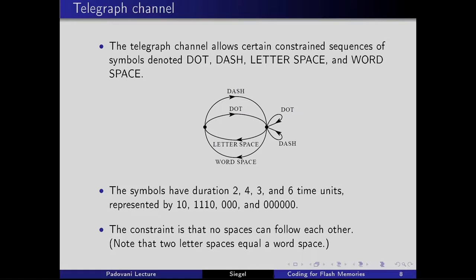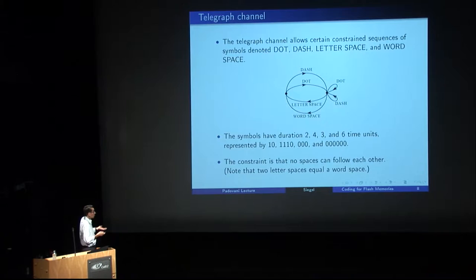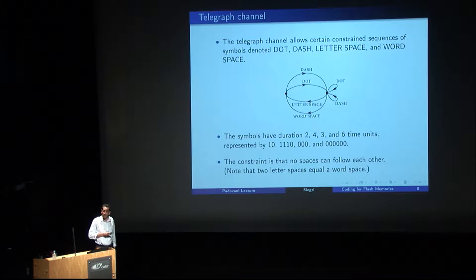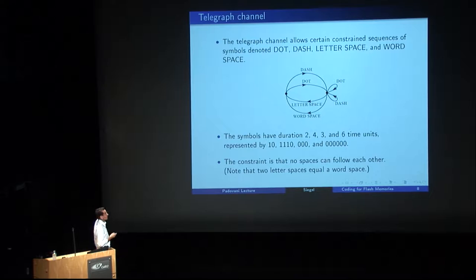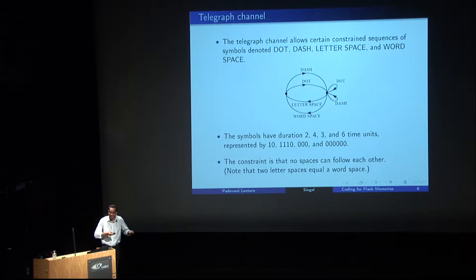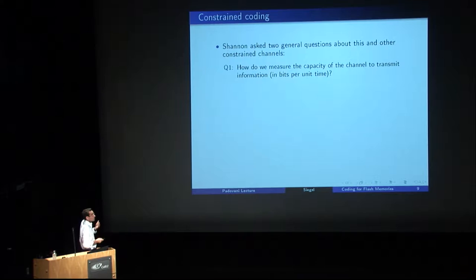The telegraph channel allows certain constrained sequences of symbols: dot, dash, letter space, and word space. These symbols have different durations — the dot is two time units, the dash is four, the letter space is three, and the word space is six. The constraint is simple: no spaces can follow each other. You generate sequences by following edges in the directed graph and reading off the labels.